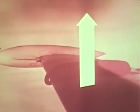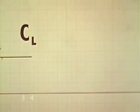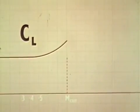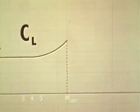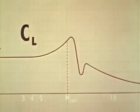What happens to lift at the shock stall? It drops suddenly. Watch the behavior of the lift coefficient. Like the drag coefficient, it's constant at low speeds. Somewhere below M-crit, it starts to increase slightly. This is because the air is becoming less dense as it speeds up over the curvature of the wing. But just above M-crit, flow separation makes it plunge suddenly downwards. Later on, it increases slightly, then falls again.